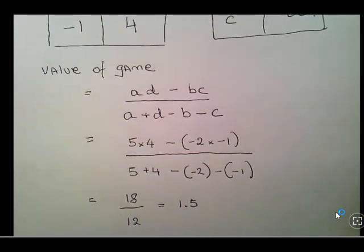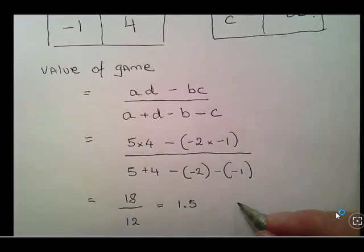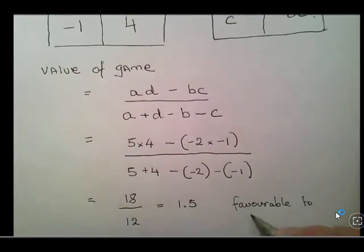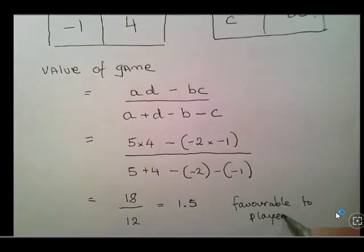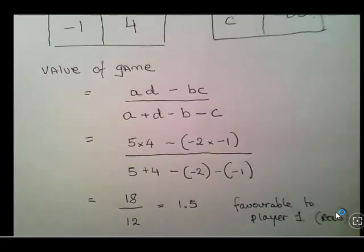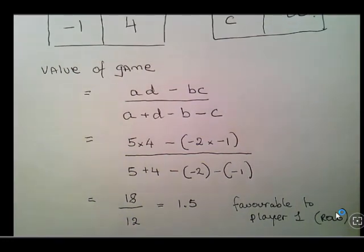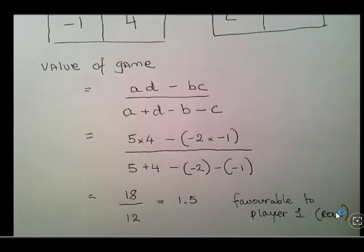The value of 1.5 is favorable to Player 1, the Row Player. Now we're going to calculate the optimal strategy for the Row Player, and then do the same thing for the Column Player. Again, you should double check in advance that it's not a strictly determined game.